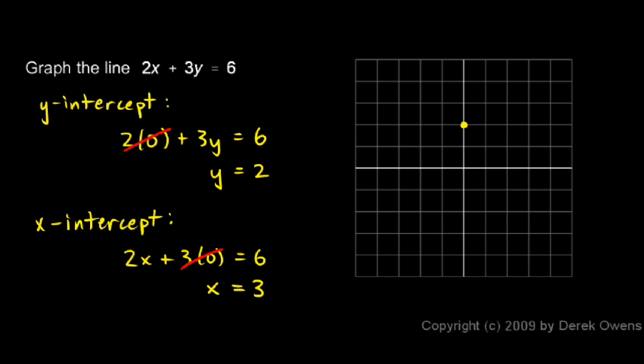That gives us another point. We got this value, x equals 3, by plugging in 0 for y. So that's another point: x is 3, and y is 0. That's our x-intercept right there. Once we have the x-intercept and the y-intercept, we can draw in the line, and it's going to look like this.